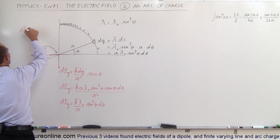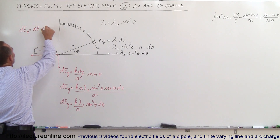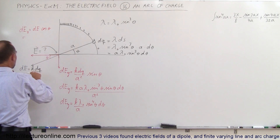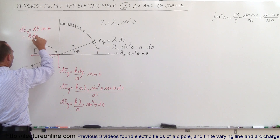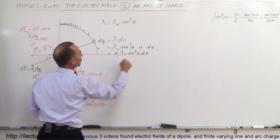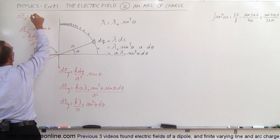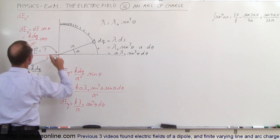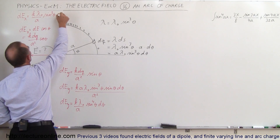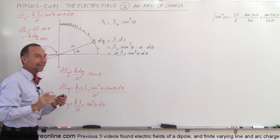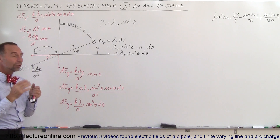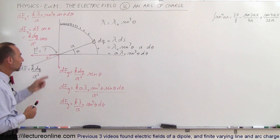In the x direction, dEx is going to be dE times the cosine of theta. Substituting dq = a·λ₀·sin³(θ)·dθ and simplifying — the a cancels the same way — we get dEx = (k·λ₀/a)·sin³(θ)·cos(θ)·dθ. So now I have the electric field element in the x direction and in the y direction. What I need to do is sum them all up and add them together to get the final electric field at that location.